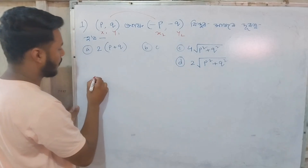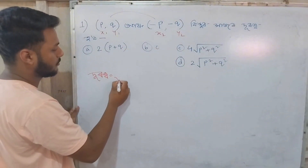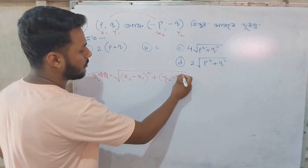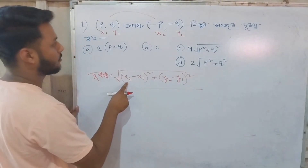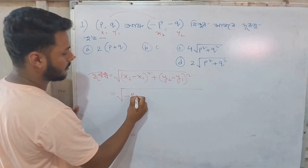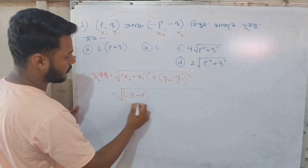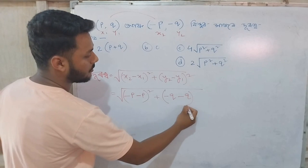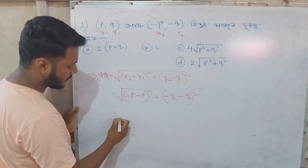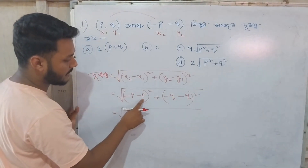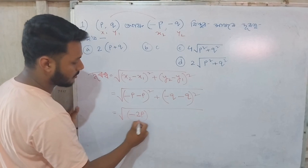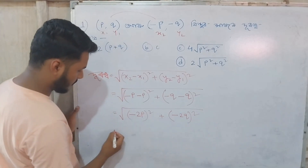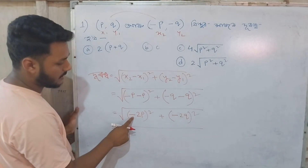The distance formula gives us: root of (x2 minus x1) whole square plus (y2 minus y1) whole square. Here x2 is management p minus x1, and y2 is management q minus y1, so the formula involves terms like minus 2p and minus 2q.